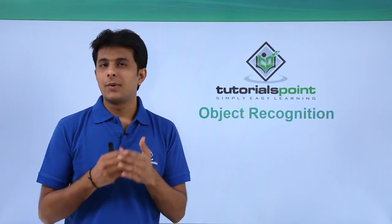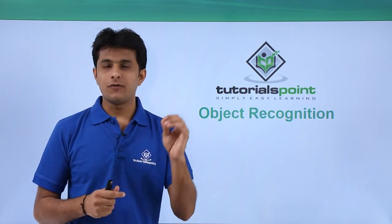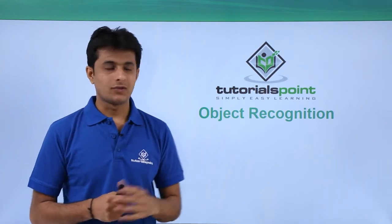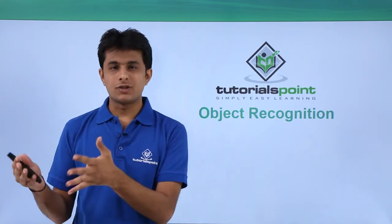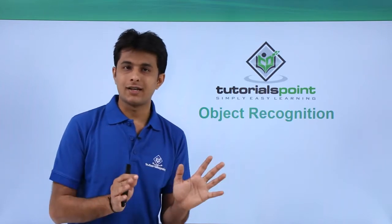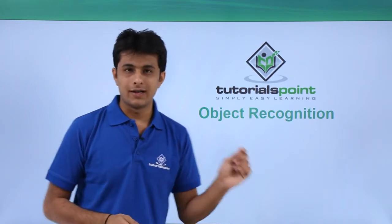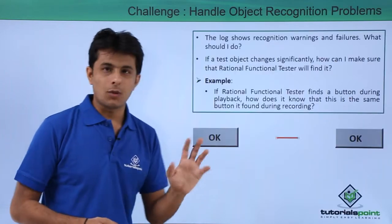RFT finds out the object with help of properties and its values. That is the topic we are learning - object recognition. In case in future the look and feel changes, RFT will still recognize with help of properties and values.